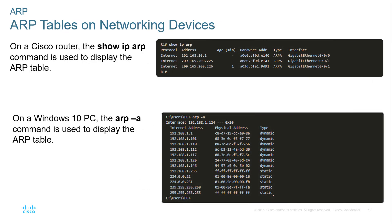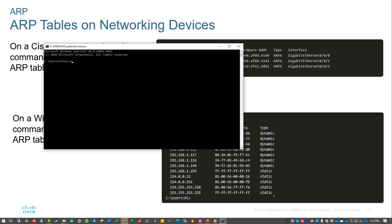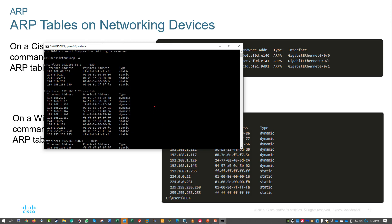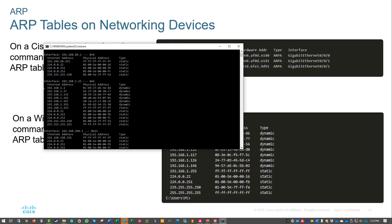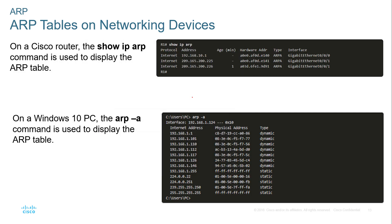We can view an ARP table by running 'arp -a' on a device. Going to my command line and running 'arp -a', we can see all of the devices currently known. I have a lot of virtual machines, so the addresses between .27 and .193 are all one computer but with virtual addresses — I have many virtual NICs because I have several VMs running.